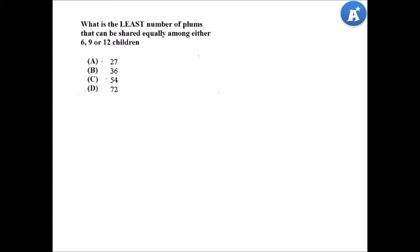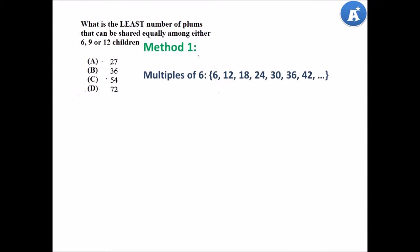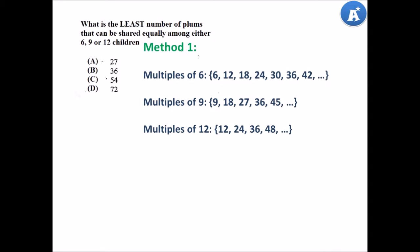Let's look at the first method — Method 1. Listing the multiples of 6: the multiples of 6 include 6, 12, 18, 24, 30, 36, 42, all the way to infinity. Multiples of 9 are 9, 18, 27, 36, 45, all the way to infinity. Multiples of 12 include 12, 24, 36, 48, all the way to infinity. So the least common multiple is therefore 36. The LCM of 6, 9 and 12 is simply 36.